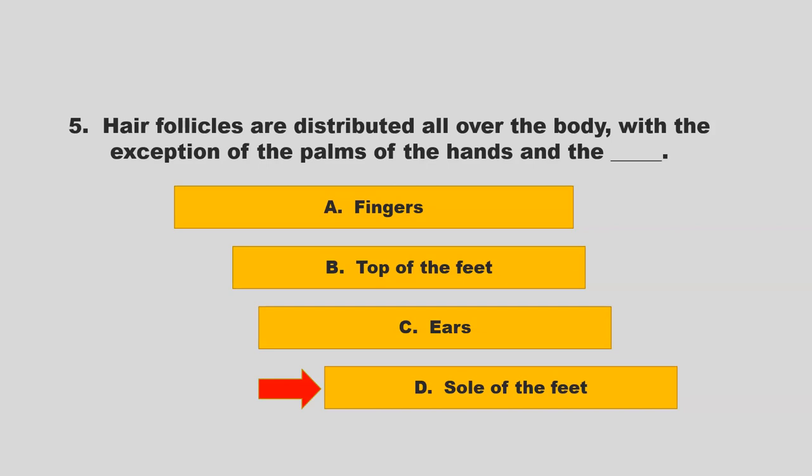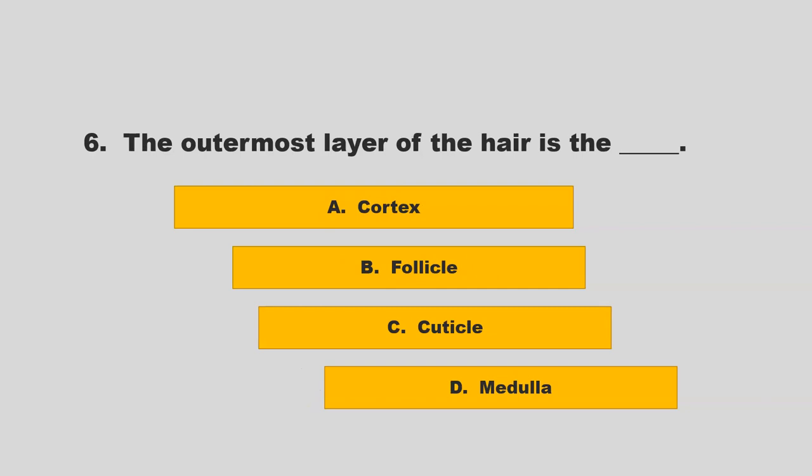The outermost layer of the hair is the blank. Is it the cortex, follicle, cuticle, or medulla? If you chose C, cuticle, you are correct.